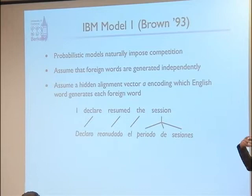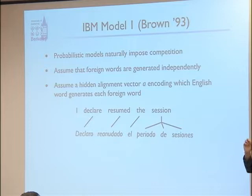Probabilistic models are a better way to go. Because they have a hidden variable which aligns the words, they will naturally impose competition. This is IBM Model 1. How many people have seen IBM Model 1 before? Almost everybody. We'll walk through it anyway — I have some tweaks at the end to keep things interesting.